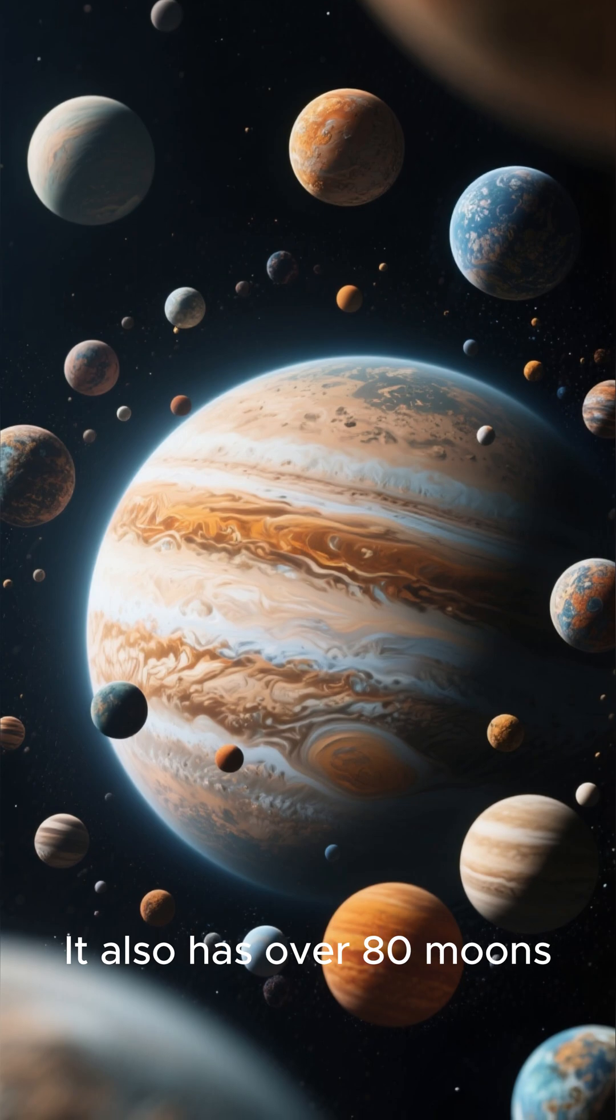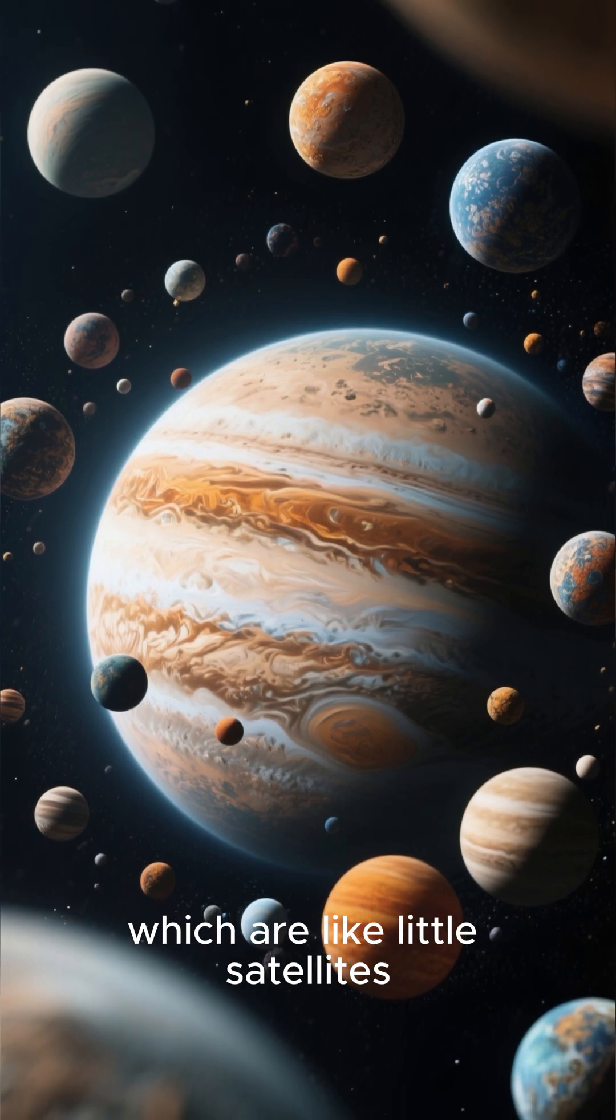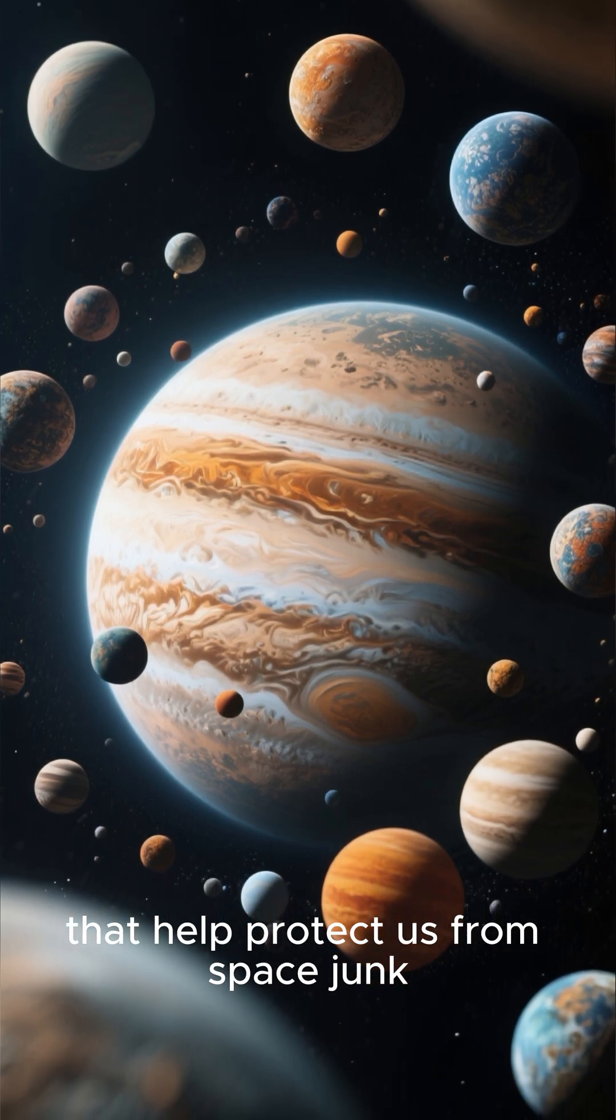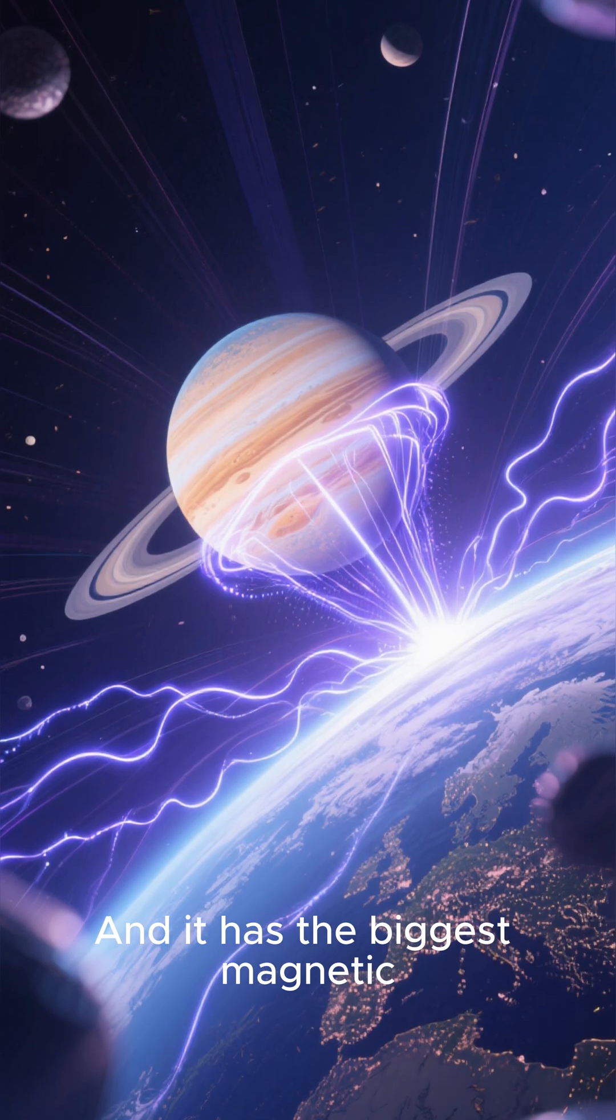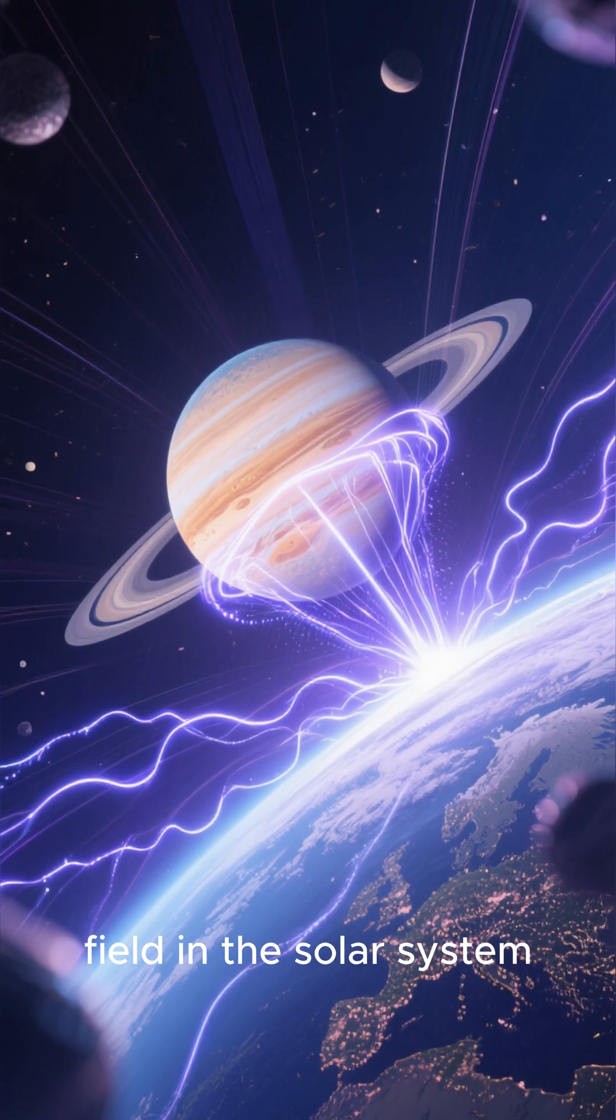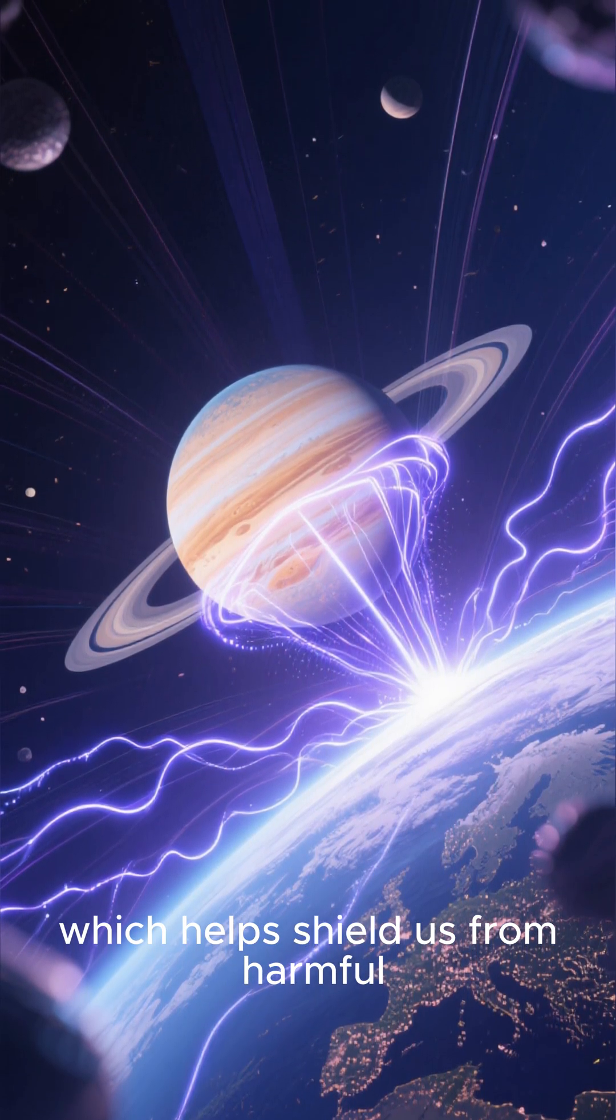It also has over 80 moons, which are like little satellites that help protect us from space junk. And it has the biggest magnetic field in the solar system, which helps shield us from harmful radiation.